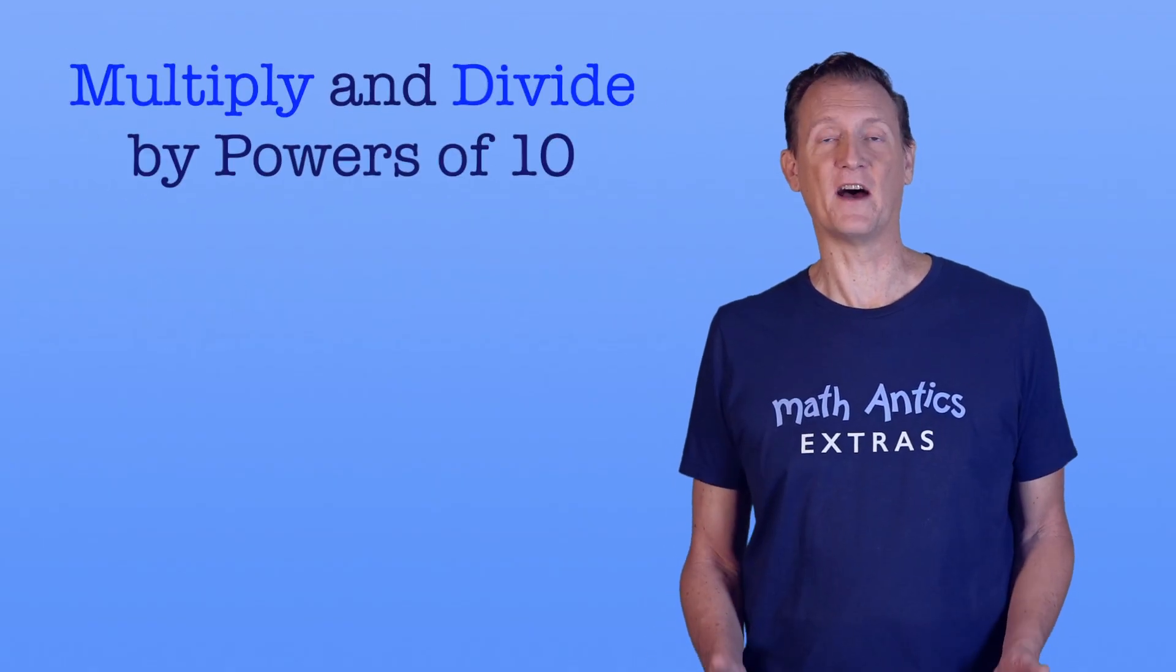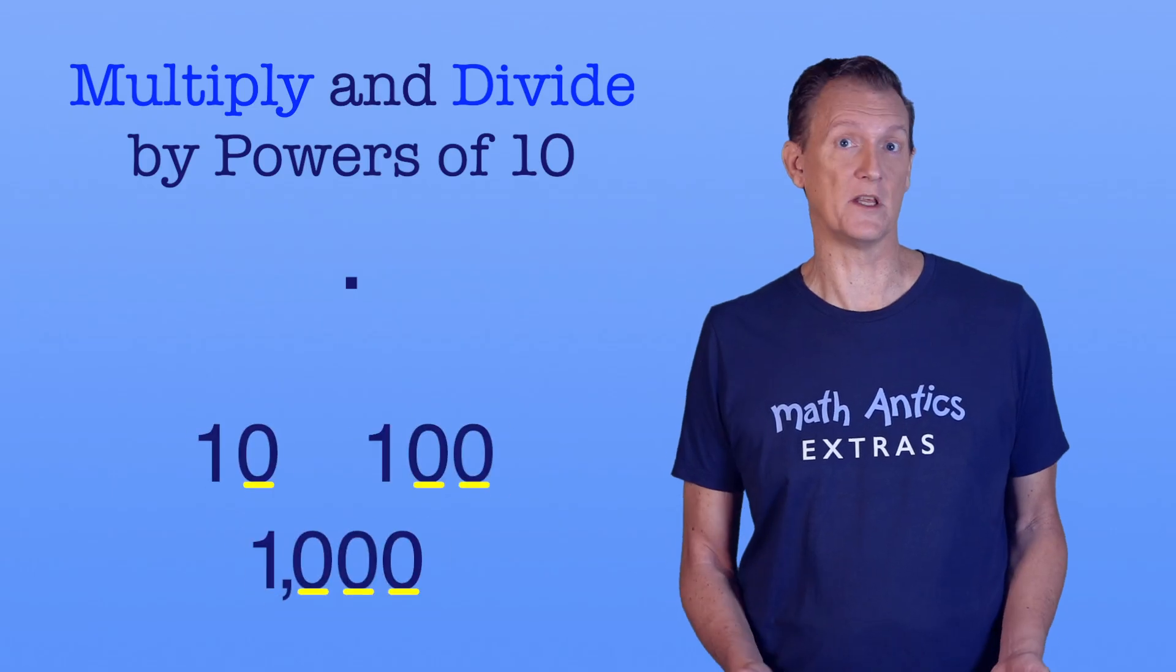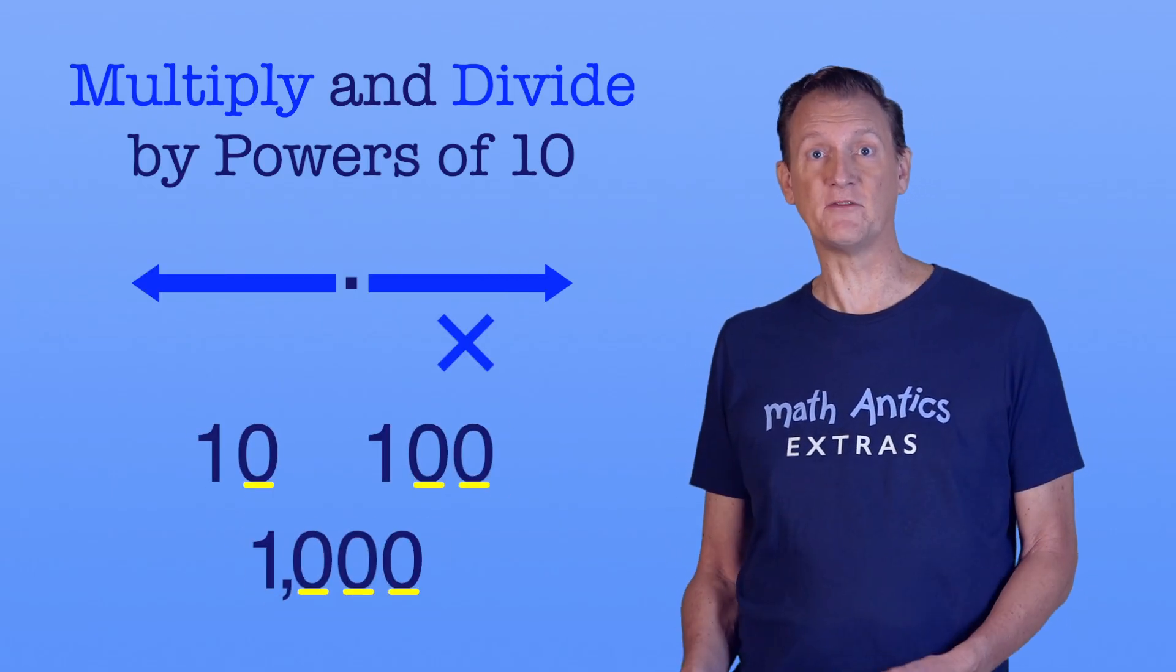So now you know how to multiply and divide by powers of 10. You just shift the decimal point by the number of zeros in the power of 10. Right to multiply, and left to divide.